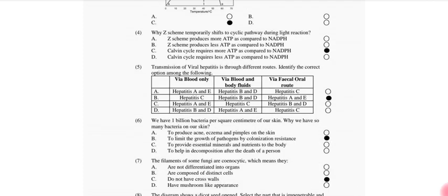Transmission of viral hepatitis is through different routes. Identify the correct option among the following. That is option B: Hepatitis A and E, Hepatitis B and D, and Hepatitis C.